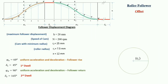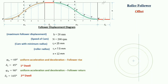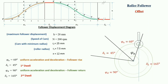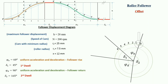Now we proceed to draw the cam profile. First, we draw the base circle. Then with the base circle and roller radius we create a circle, and the offset circle has radius X representing the offset distance. We then divide this circle into angles: phi A, delta 1, phi D, and delta 2. We divide phi A into 6 equal parts and phi D into 6 equal parts.